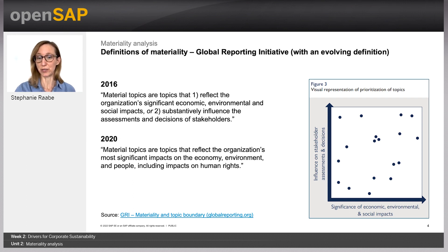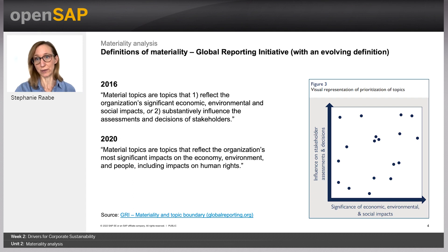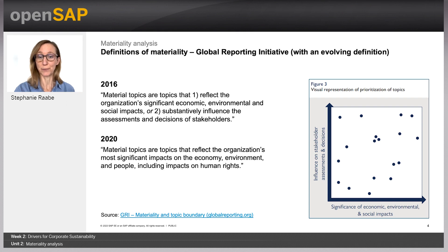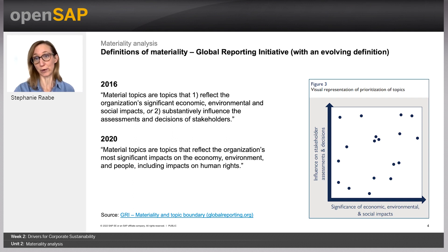The overall aim of the GRI standards is to help organizations communicate about the impact they have on the economy, society, and environment, providing stakeholders with information about organizations' contributions — positive or negative — towards the goal of sustainable development. The GRI's definition of materiality has evolved over time. I've brought along the last two definitions from 2016 and 2020. The first one from 2016 led to the materiality matrices that have been part of past sustainability reports, where you can still find them often today.